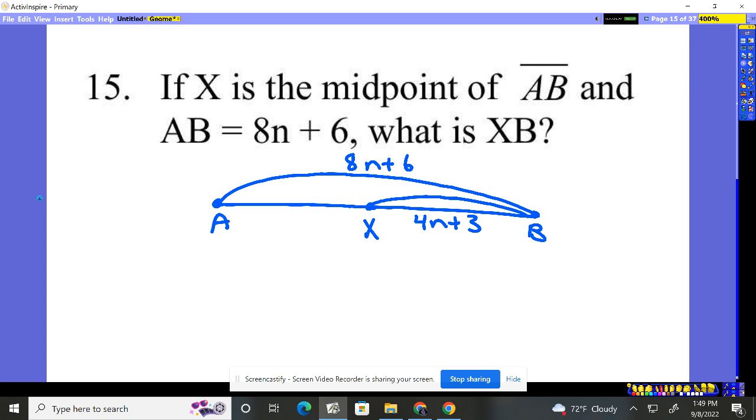So each of these pieces, A to X is 4n plus 3, and X to B is 4n plus 3. So XB is the expression 4n plus 3, that's our answer.